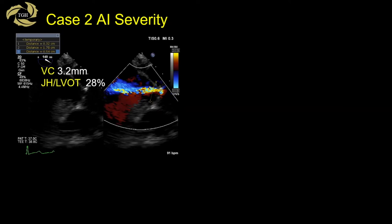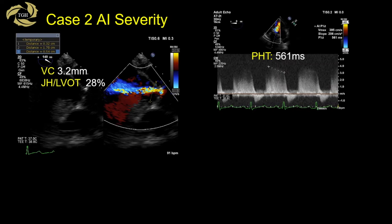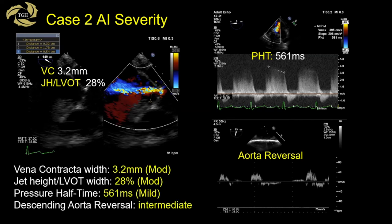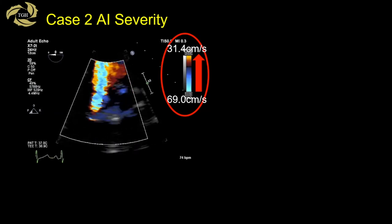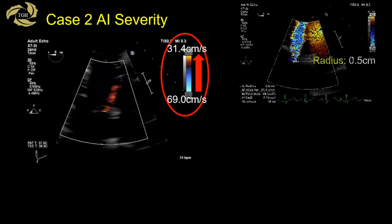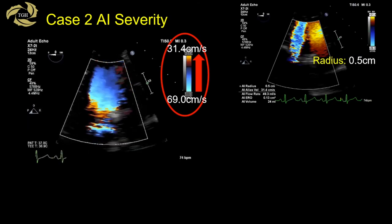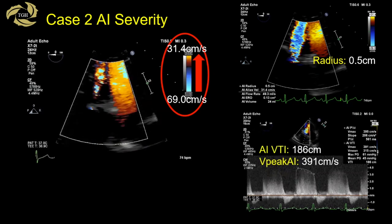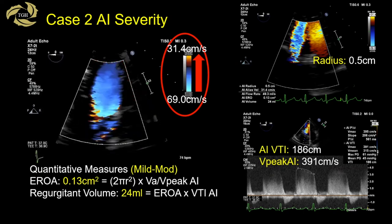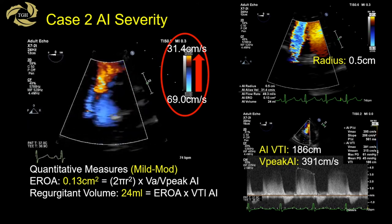For AI severity in Case 2, the vena contracta is 3.2 mm and the ratio is 28%. Pressure half-time is 561 ms, and there appears to be mild aortic flow reversal — these indicate mild to moderate AI. PISA is more difficult with less AI as error tends to increase, but quantitative measures confirm mild to moderate AI: EROA 0.13 cm² and regurgitant volume of 24 cc.